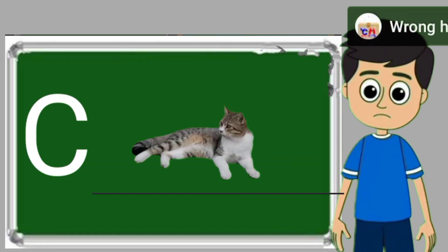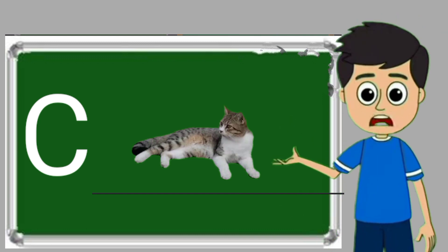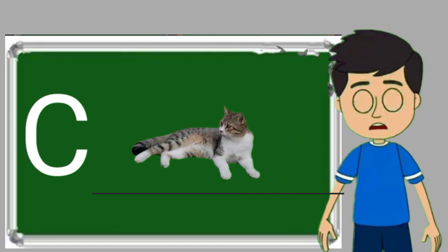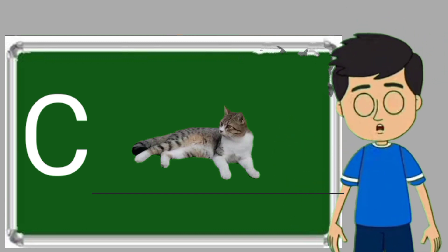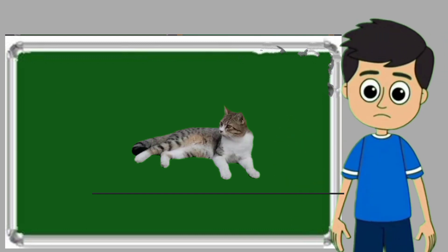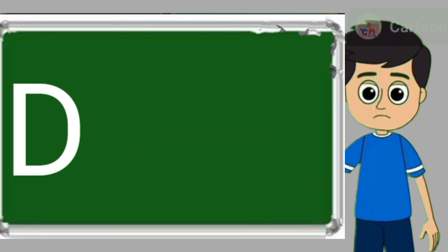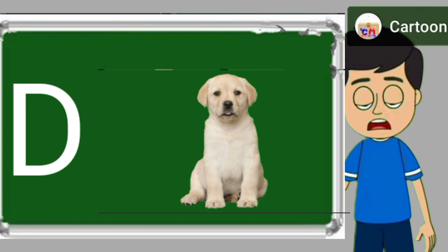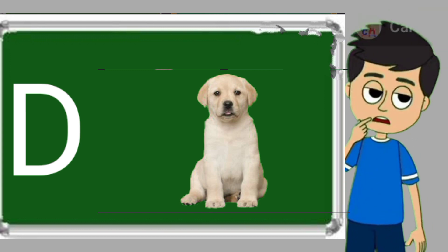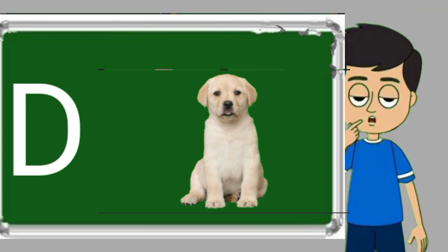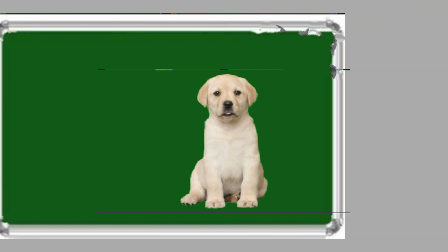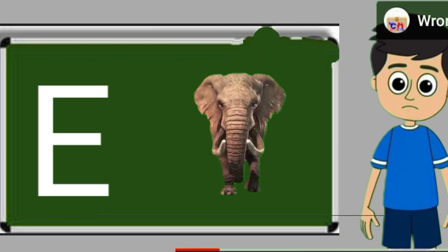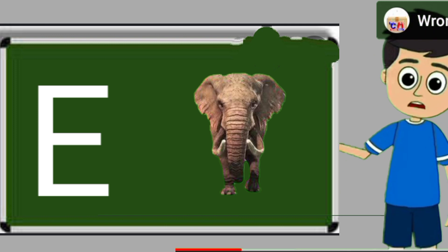C for cat. Cat means billy. D for dog. Dog means kutta.